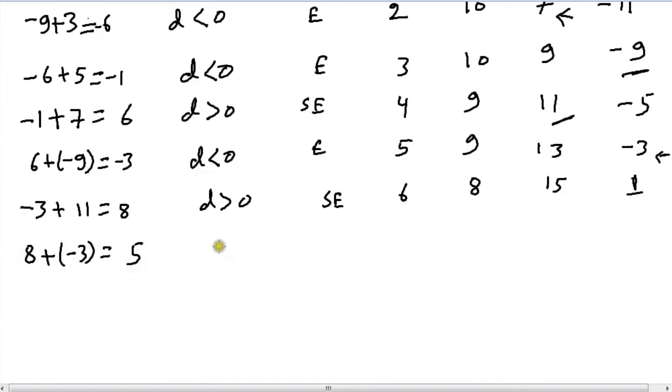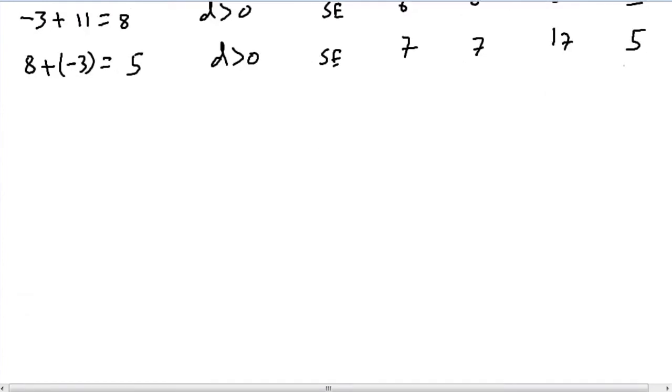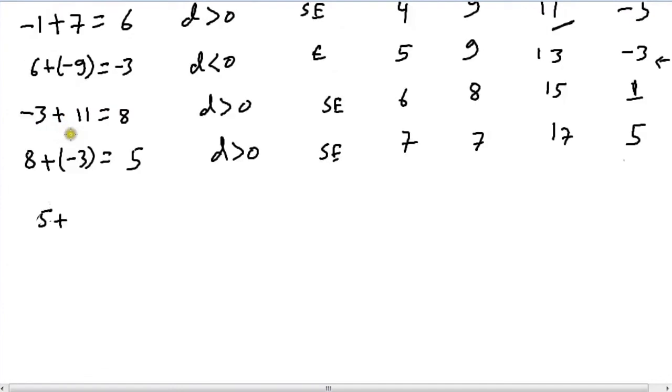d is still greater than zero which is SE. It's going to be x becomes 7, y becomes also 7. del_e becomes 17, del_se becomes 5. So once again we increment our d which would become 5 + (remember the del_se was 1) so 5 + 1 = 6.